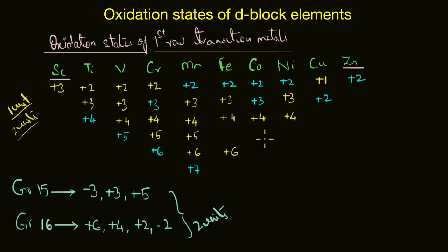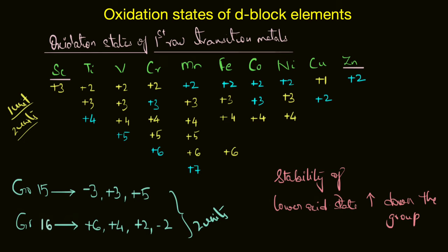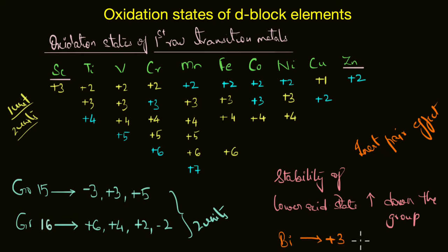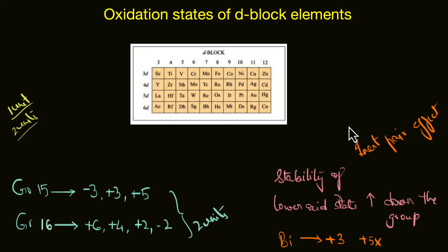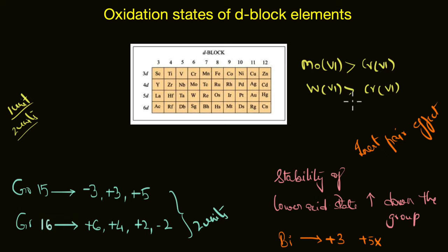A contrasting feature between d-block and p-block elements is the stability of higher oxidation states. In the p-block, the stability of lower oxidation states increases as we go down the group — due to the inert pair effect. For example, in group 15, bismuth is more stable in the +3 oxidation state rather than the +5 group oxidation state. However, in d-block elements, it was found that as we go down the group, higher oxidation states become more stable — for instance, Mo(VI) was found to be more stable than Cr(VI), and W(VI) more stable than Cr(VI).